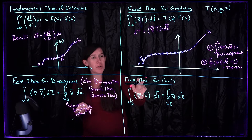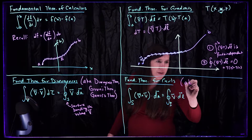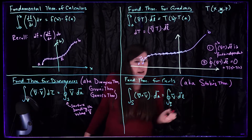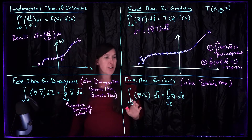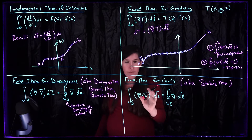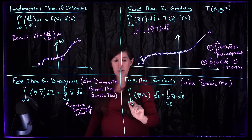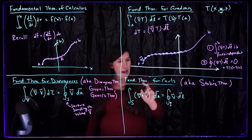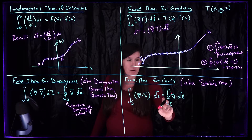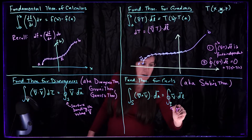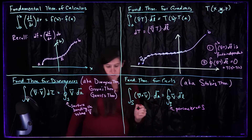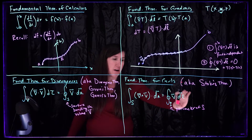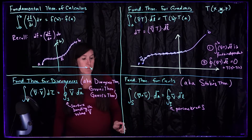Finally, the fundamental theorem for curls, which more often goes by the name Stokes' theorem. We follow the same pattern where all the information is found on the boundary. On the left-hand side, we're doing a surface integral over the curl, and that's going to be equal to a line integral over P, the perimeter of our surface S. When you use this identity, you want to be sure you have your surface on the left-hand side, and on your right-hand side the line integral is over the perimeter of that surface.